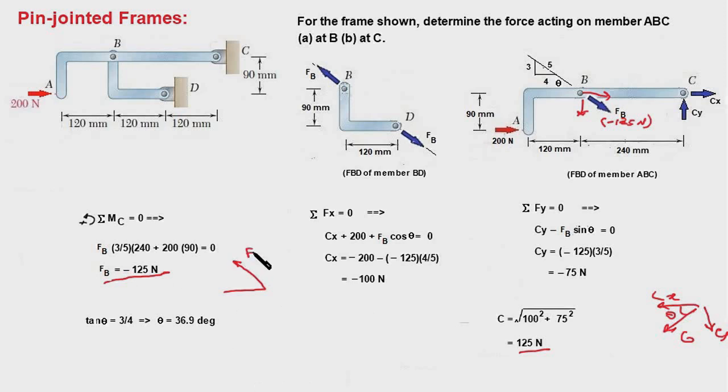And at point B, FB in reality is in this direction. This is FB, value is 125 N, in this direction, opposite direction to what was assumed earlier. And the angle it makes with the x-axis is 36.9 degrees. So these two are the answers for this problem.